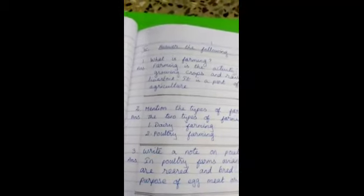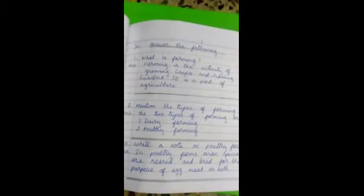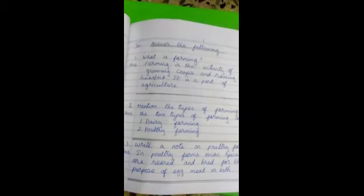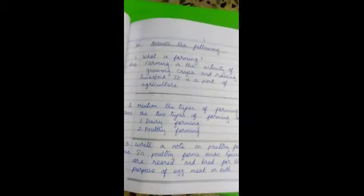Then put number three. Write a note on poultry farm. Answer, in poultry farms, oven pieces are reared for the purpose of egg, meat or both. Here three questions are finished up. Draw the line like that.